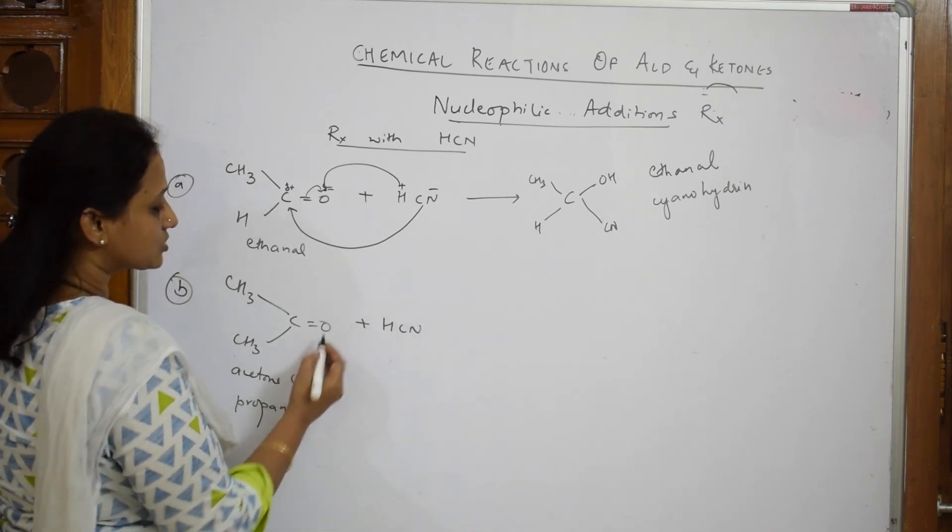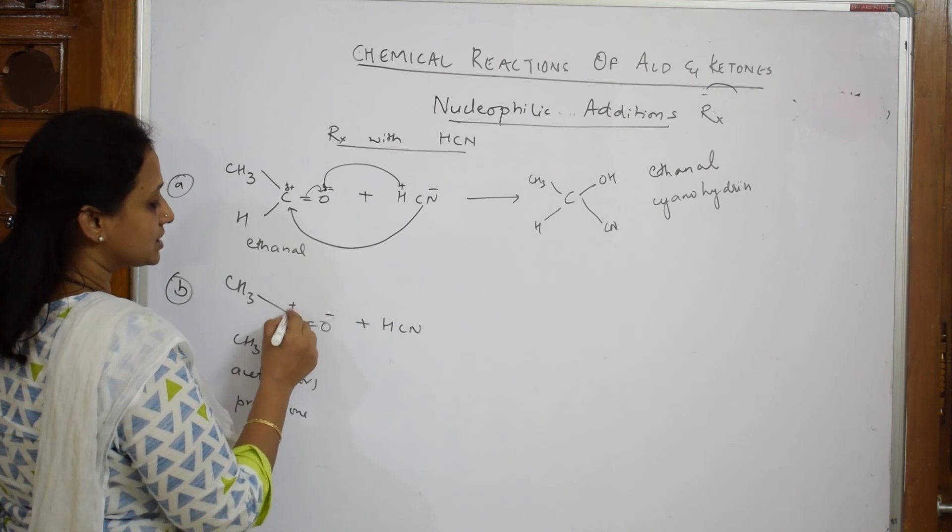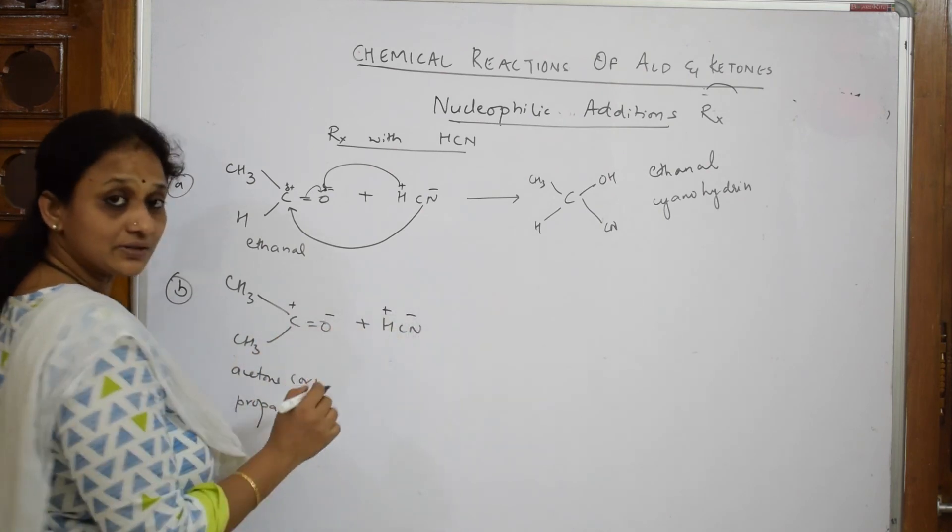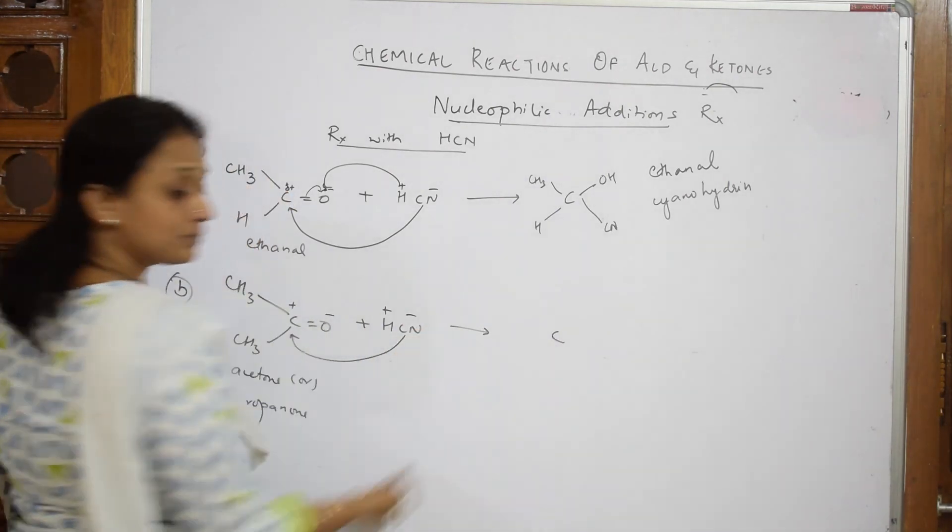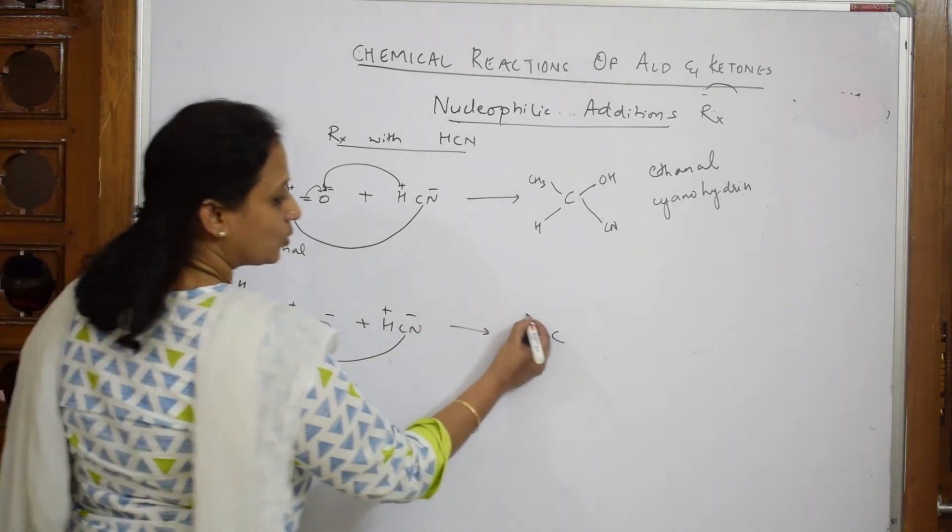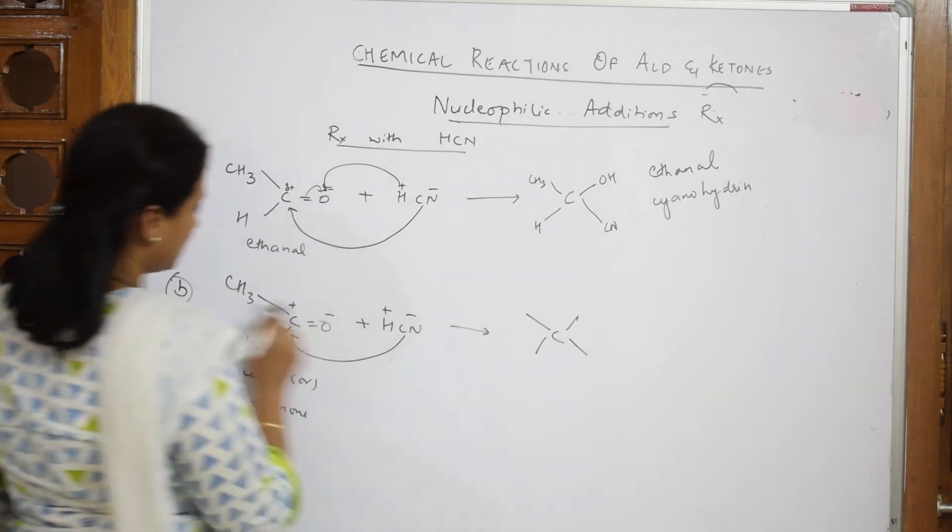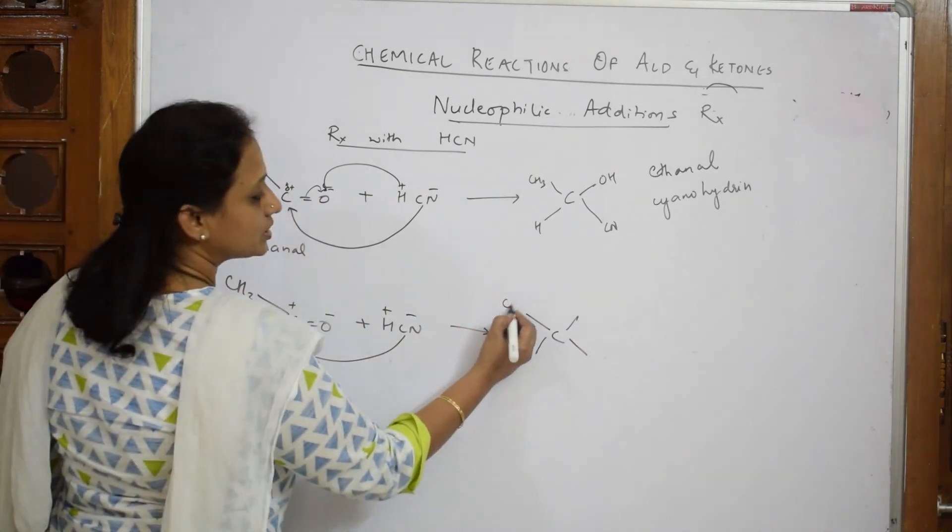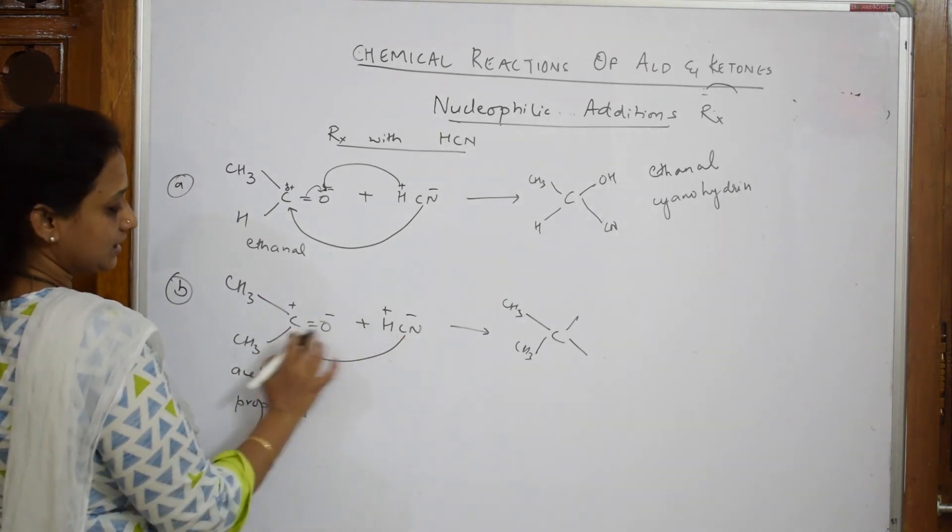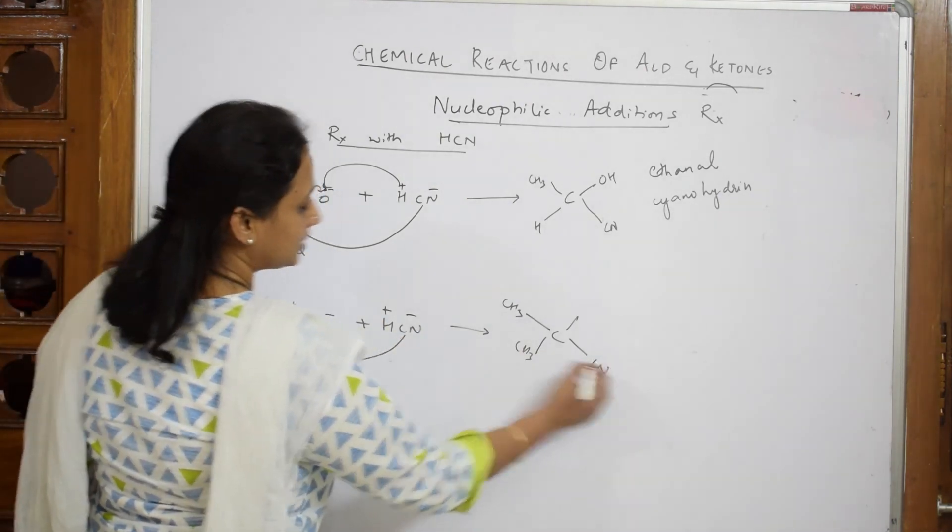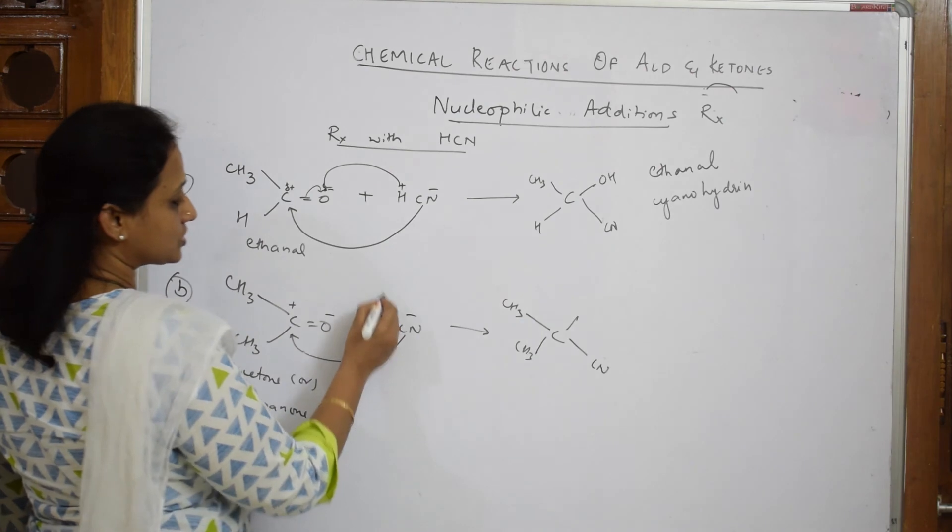Again same story - oxygen becomes minus, carbon gets plus. The nucleophile CN- goes and attacks the carbon atom. What do I get? Carbon with four valences - two alkyl groups CH3, CN attacks carbon, and O- gets hydrogen.